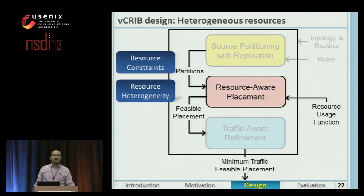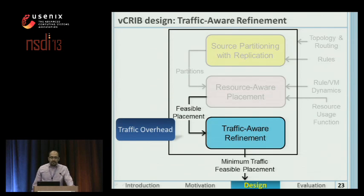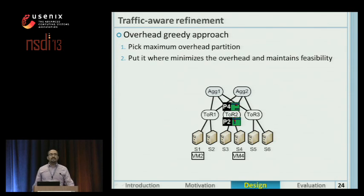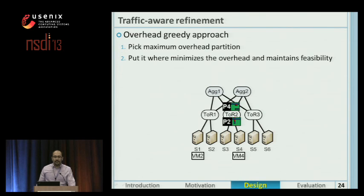We then abstracted the concept of similarity for heterogeneous devices using a device-dependent resource usage function, so now we can handle heterogeneous resources. The last module is the traffic overhead refinement that tries to minimize the traffic overhead given a feasible placement. The feasible solution may save partitions far from the sources or the shortest path of the flows because it doesn't consider the traffic overhead — it just finds a feasible placement. A simple approach to minimize the traffic overhead, which we call the overhead greedy algorithm, is to just pick the partition with maximum overhead and put it where it minimizes its overhead and maintains the feasibility of the placement.